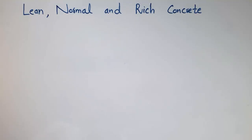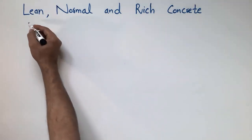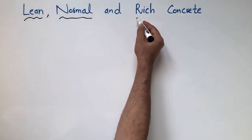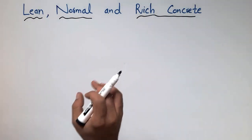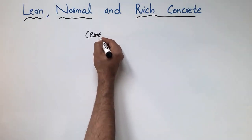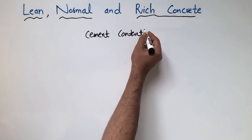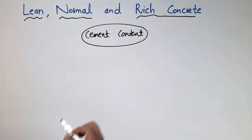Hello guys, welcome back to the C1 Engineering YouTube channel. Please subscribe to our channel for daily C1 Engineering videos. Today our lecture is about the three different categories of concrete: lean concrete, normal concrete, and rich concrete. These three different categories depend on the cement content.